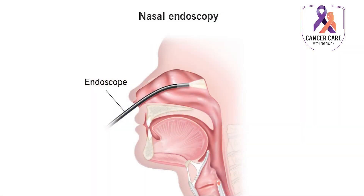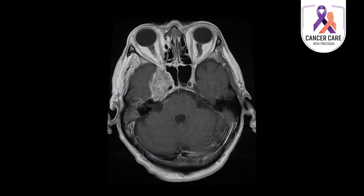Whenever a patient with suspected nasopharyngeal cancer comes to us, we take a detailed history, clinically examine the patient, and request some routine blood tests. The patient will need a nasoendoscopic examination and often an examination under anesthesia and guided biopsy. Once a biopsy confirms the cancer, we request an MRI scan of the face and neck, and sometimes a CT scan to check for local and distant spread.